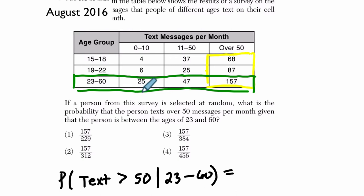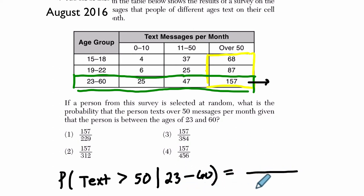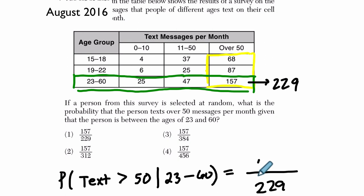So I'm going to add up 25, 47, and 157. Those are all the people that are between 23 and 60, and that's going to be our denominator down here, and that's 229. And then out of that group, there are 157 that text over 50 times per month. That's choice one. I hope that helps.